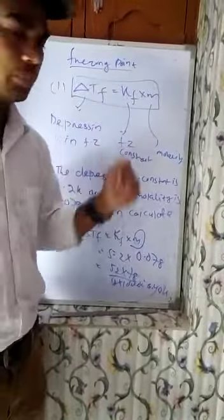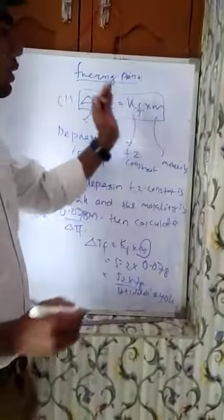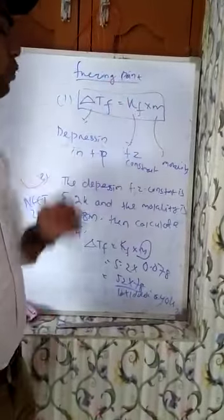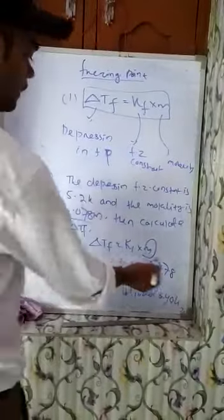So now you know the concept that ΔTF, depression in the freezing point, is equal to depression constant into molality. So that you multiply only this much to solve this type of problem.